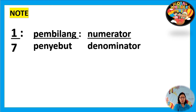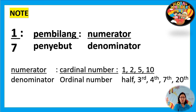Let's look at the next note. One seventh — one is called the numerator, or in Bahasa Indonesia pembilang, and seventh is the denominator, or penyebut. This is how to write numerator and denominator. We use cardinal numbers, for example one, two, five, ten, and so on, to write the numerator.